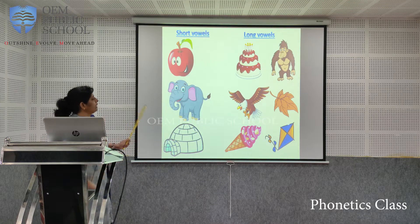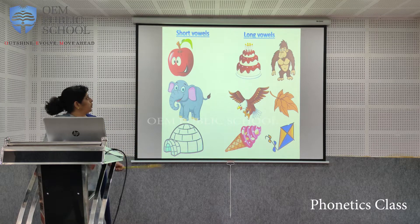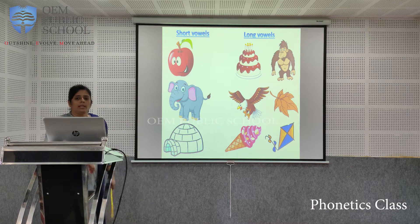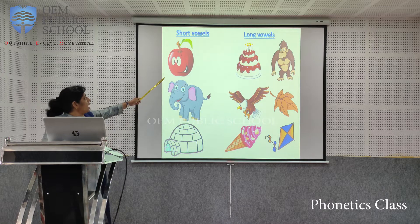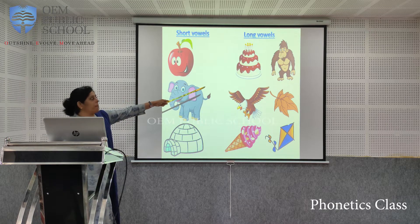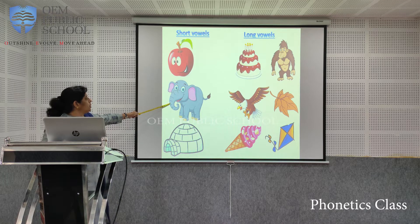Now I want you to look at the picture and identify the words and tell me the difference. I shall do the first one for you. A — apple uses the short sound, but cake and ape — do you hear the difference? The sound A is the long vowel. You say cake — you hear the long A sound, and ape.